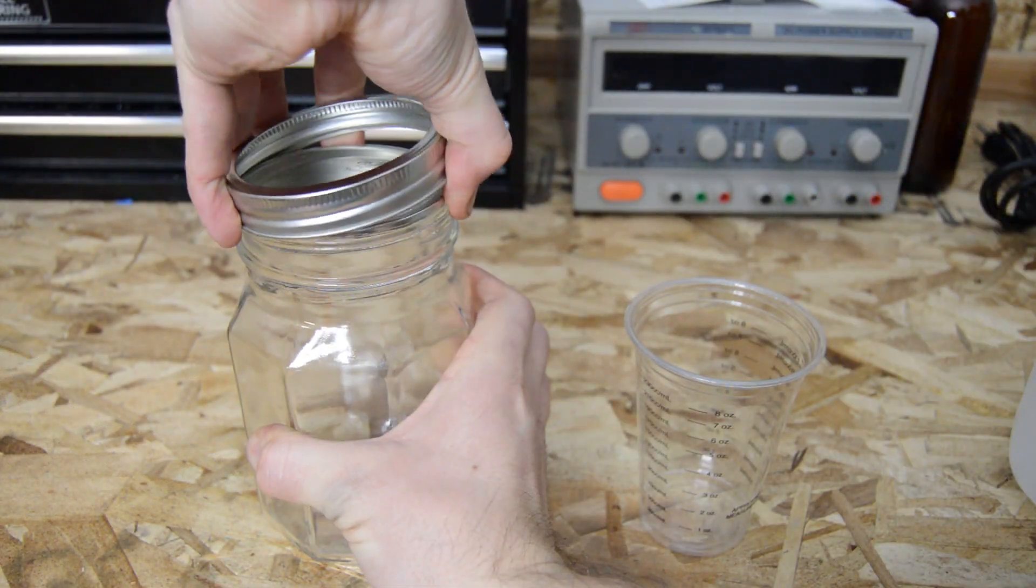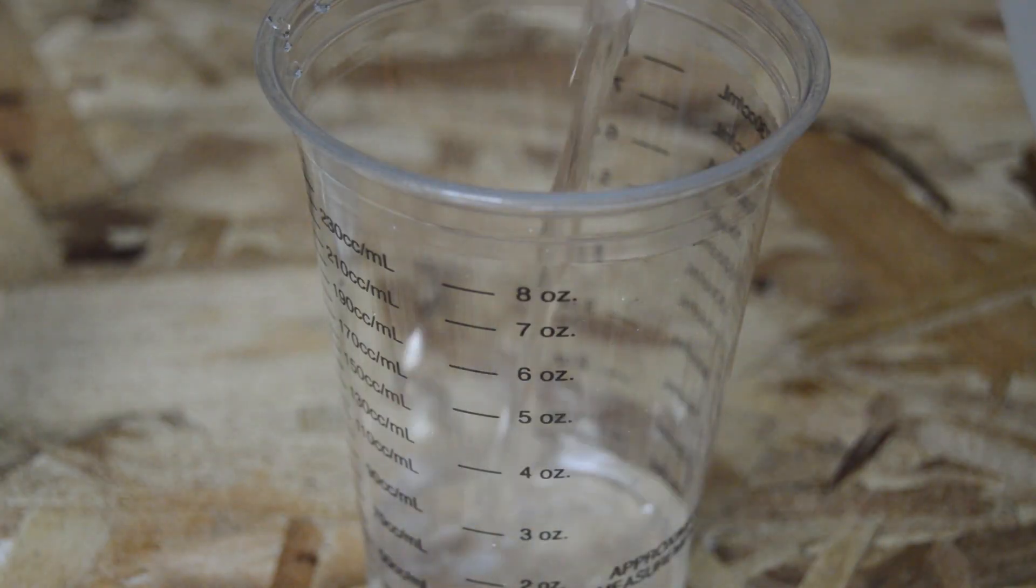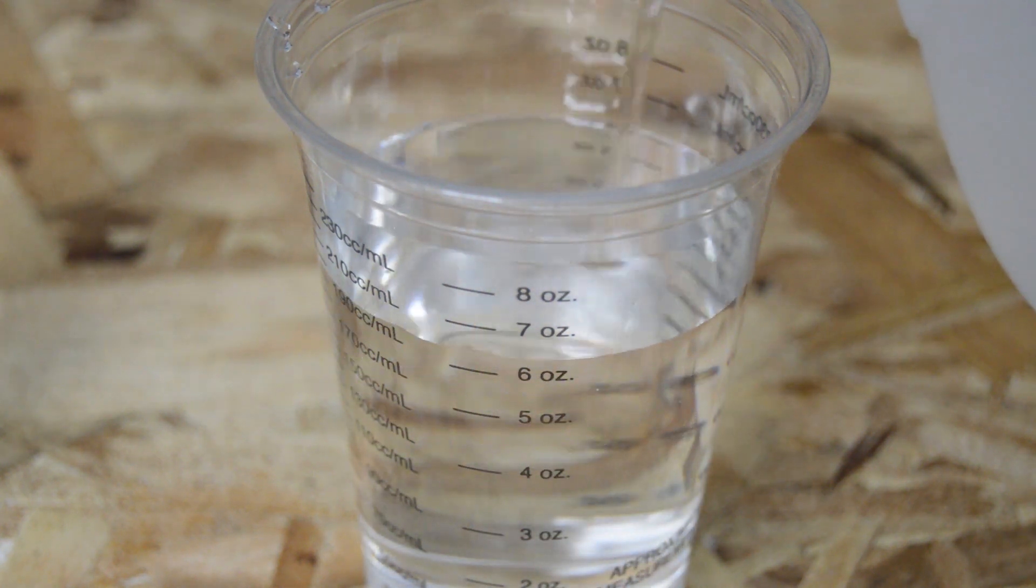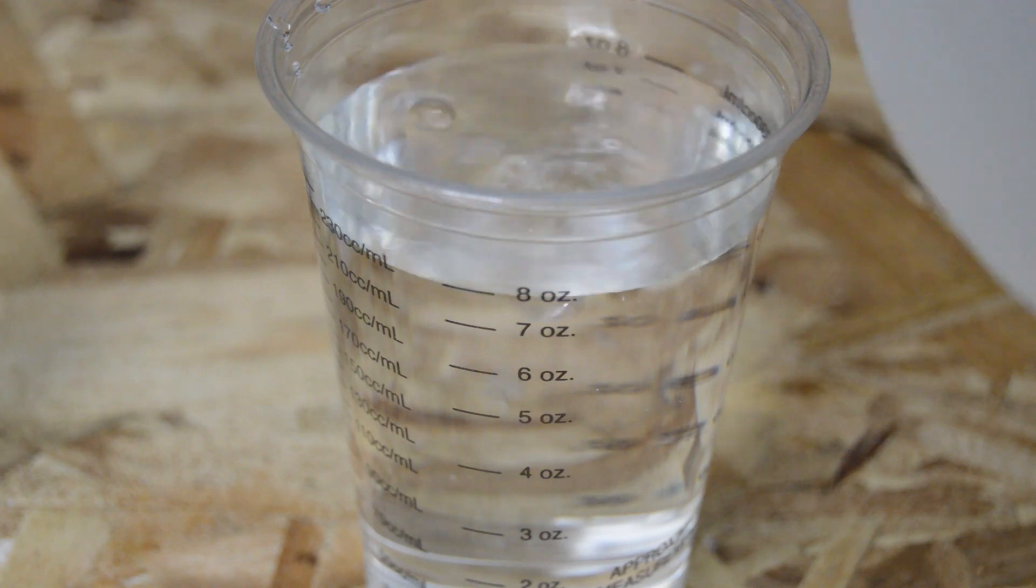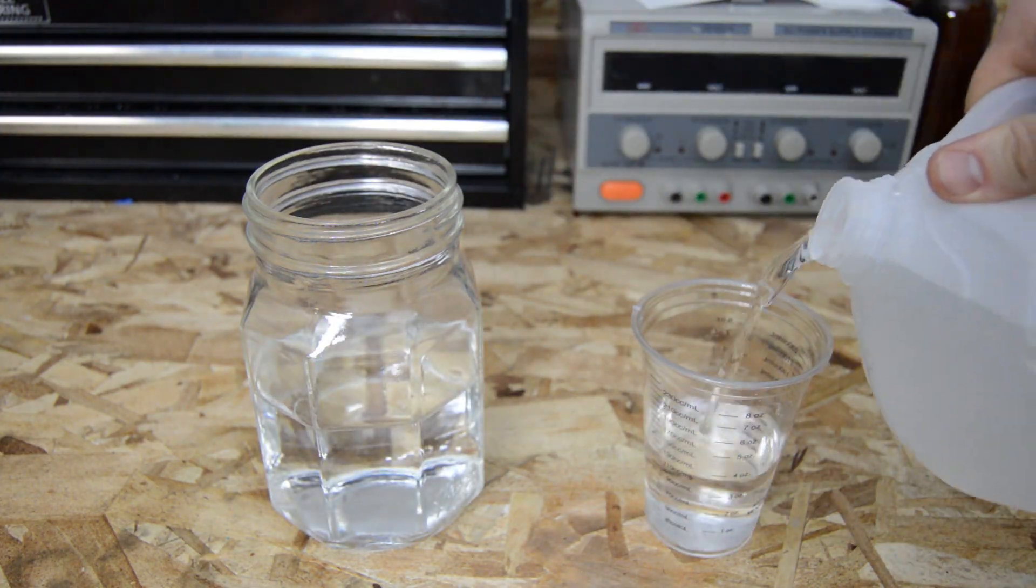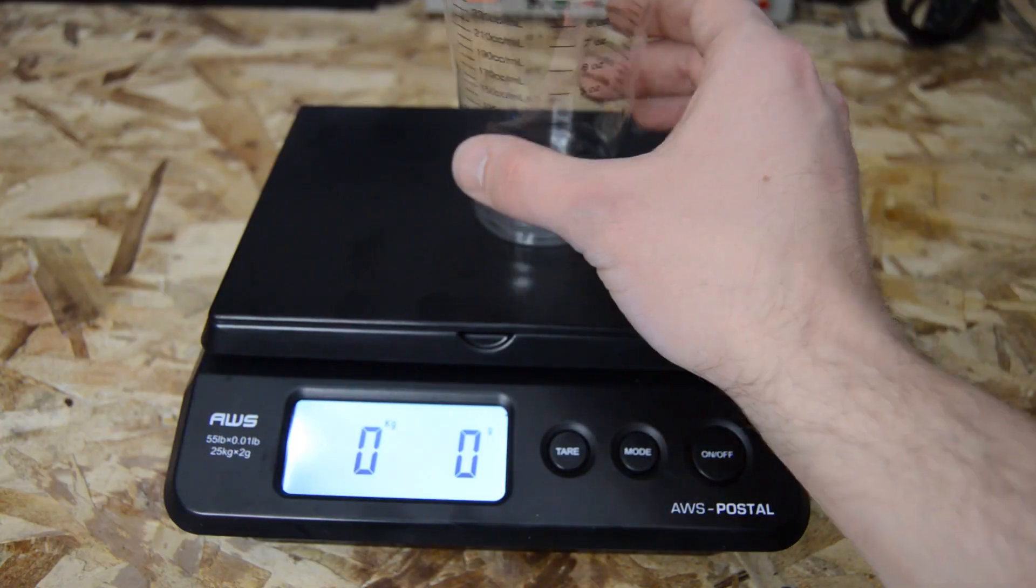Let's get started. We're making a nickel plating solution for what's called a Watts plating bath. Take your Mason jar and a measuring cup and add 24 ounces of distilled water. The reason you want to use distilled water is to minimize the mineral impurities present in tap water and spring water.